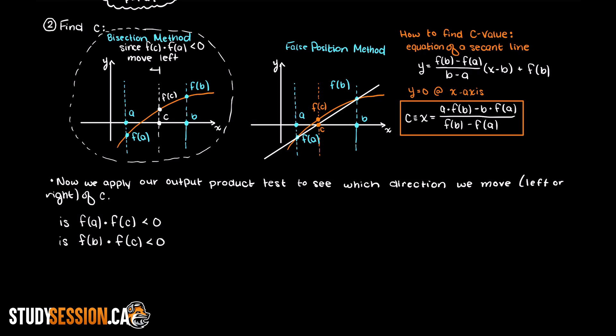Then, you just adjust your root boundaries using this new information. So, like we said earlier, if f of a times f of c is negative, then we know that the root lies to the left of our new midpoint c. Therefore, b takes on the value of c and we move to our next iteration.